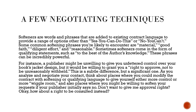Softeners are words and phrases added to existing contract language to provide a range of options other than a flat yes or no. Some common softening phrases you're likely to encounter are 'material,' 'good faith,' 'diligent effort,' and 'reasonable.' Sometimes softeners come in the form of qualifying statements such as 'to the best of the author's knowledge.' These phrases can be incredibly powerful. For instance, a publisher might be unwilling to give you unfettered control over your book's jacket design, but it would be willing to grant you a right to approve, 'not to be unreasonably withheld.' As you analyze and negotiate your contract, think about places where you could add softening or qualifying language to give yourself more control or more wiggle room. Don't want to give me approval rights? How about a right to be consulted instead?